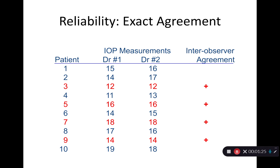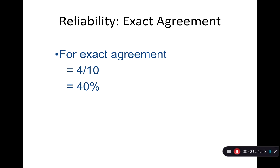Here's an example of exact agreement of reliability. We have two measurements on ten patients by two doctors. They went through and measured pressures on each patient, one at a time, all ten of them. On an exact measurement where they get exactly the same thing, that actually only happens about 40% of the time in this example. In patients three, five, seven, and nine, they got exactly the same measurement. On the other patients, they did not measure the exact same thing. For our measurement of agreement, we can say four over ten — they had 40% agreement.